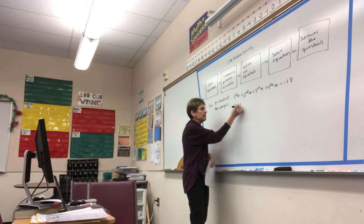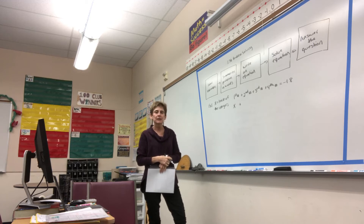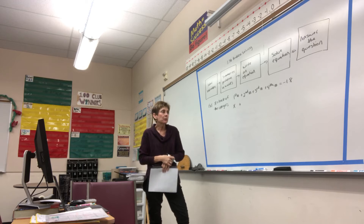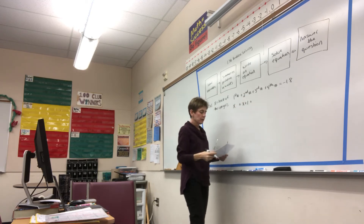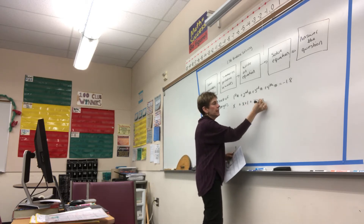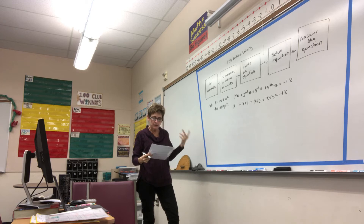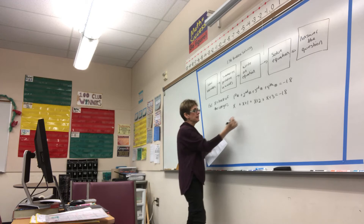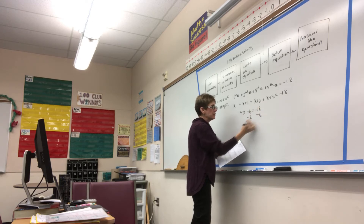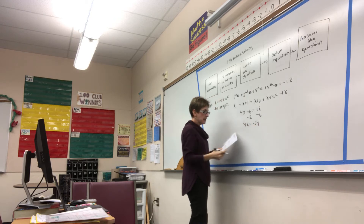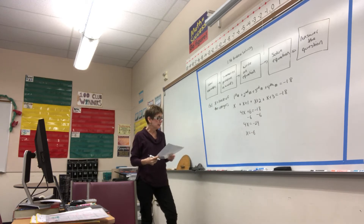If these integers are right in a row, the second number would be x plus one, the third would be x plus two, and the fourth would be x plus three. These all have to add up to negative 18. Combining like terms, all the x's give us 4x, and all the numbers add up to six, so 4x plus 6 equals negative 18. Doing opposite operations: 4x equals negative 24, and dividing by 4, x equals negative 6. That was example number one.